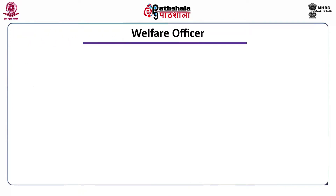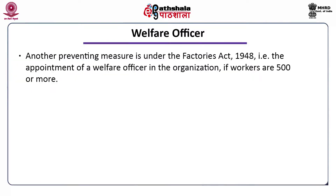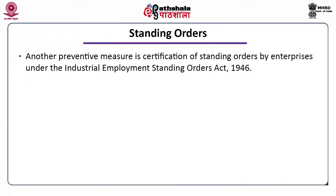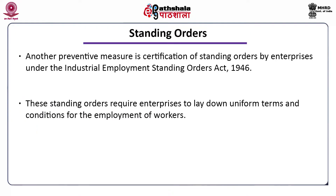Another preventive measure is the appointment of a welfare officer under the Factories Act 1948. If 500 or more workers are normally employed in any organization where the Industrial Disputes Act or Factories Act is applicable, it is mandatory to appoint a full-time welfare officer. Another preventive measure is the certification of standing orders by enterprises under the Industrial Employment (Standing Orders) Act 1946, which requires enterprises to lay down uniform terms and conditions for the employment of workers.